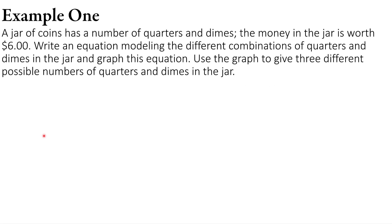First example: a jar of coins has a number of quarters and dimes, and the money in the jar is worth $6. Write an equation modeling the different combinations of quarters and dimes in the jar and graph this equation. Then use the graph to give three different possible numbers of quarters and dimes in the jar. Let's see how this arrives at a standard form equation.